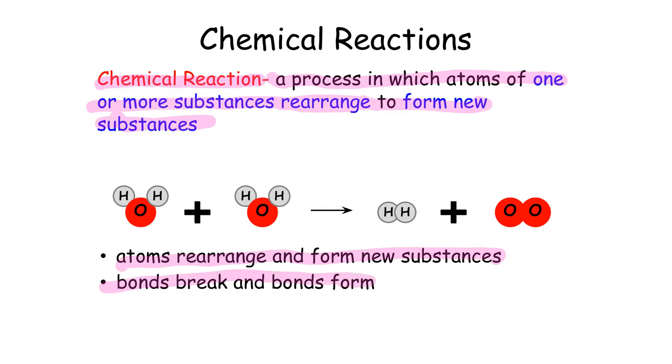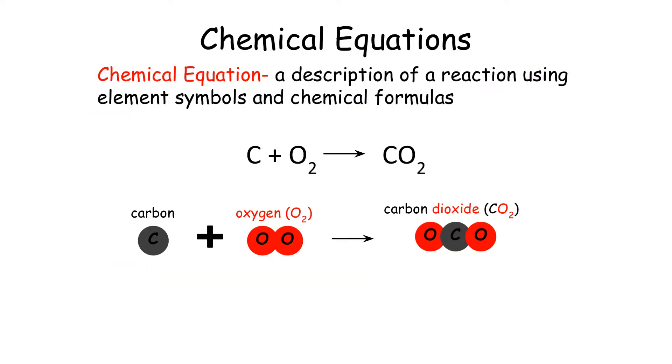A chemical equation is a description of a reaction using element symbols and chemical formulas. It's our shorthand way of representing a chemical reaction.